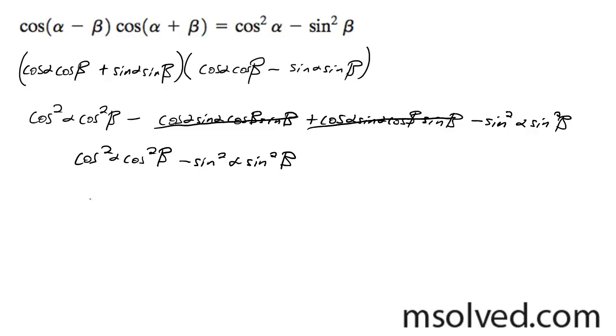Now this isn't quite what we need up there, but here's what we're going to do. I can rewrite cosine squared beta as one minus sine squared beta, which is a trig identity.